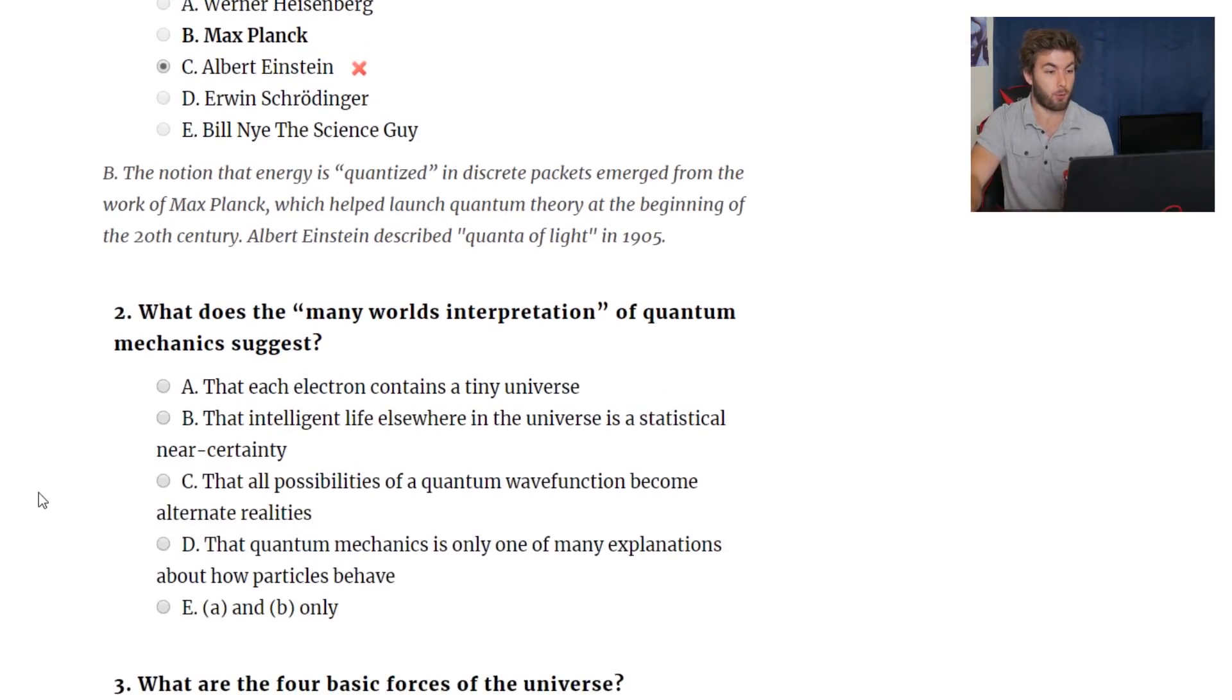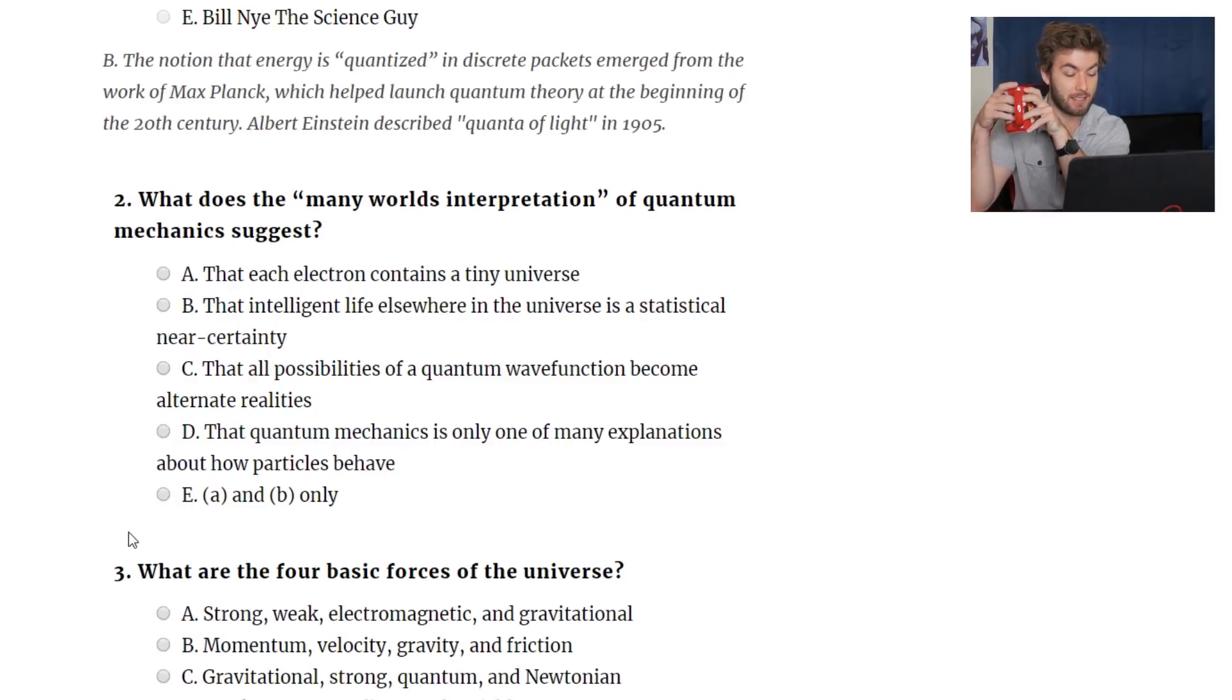What does many worlds interpretation of quantum mechanics suggest? That each electron contains a tiny universe. You're my battery, motherfucker. That intelligent life somewhere elsewhere in the universe is a statistical near certainty. That all possibilities of quantum wave function become alternate realities. Or that quantum mechanics is only one of many explanations about how particles behave. It's clearly C. That all possibilities of quantum wave functions become alternate realities. What kind of weird-ass subject is quantum mechanics where you can answer that as, oh, it's clearly that one.